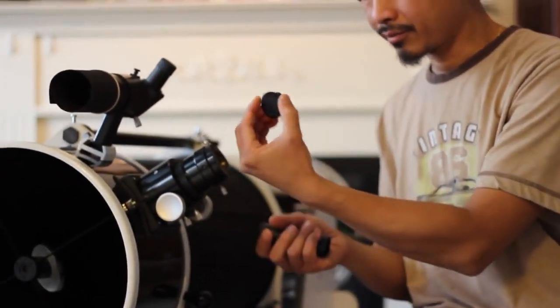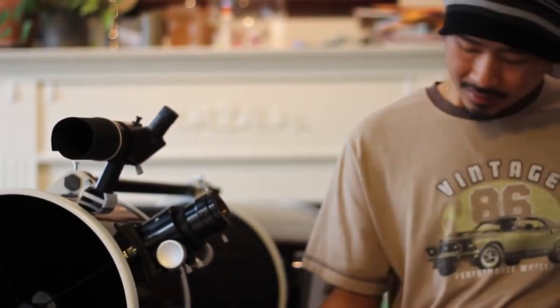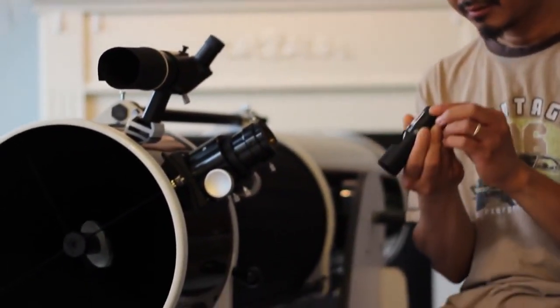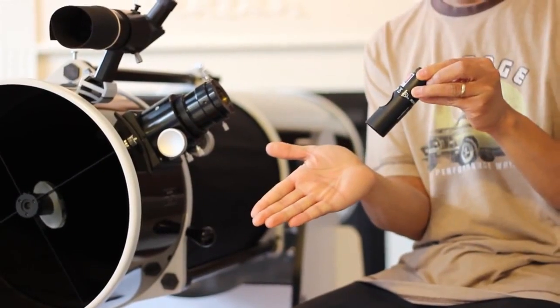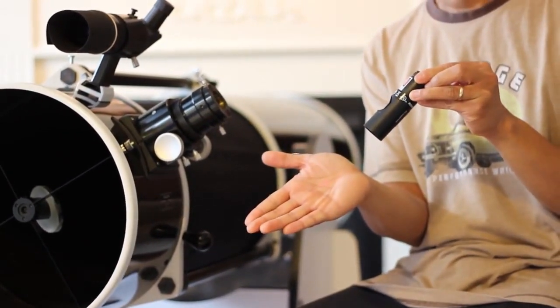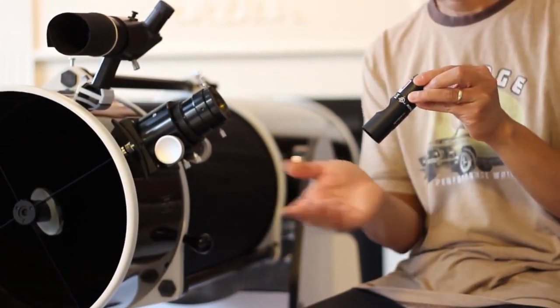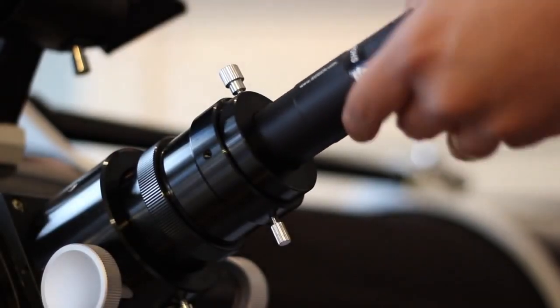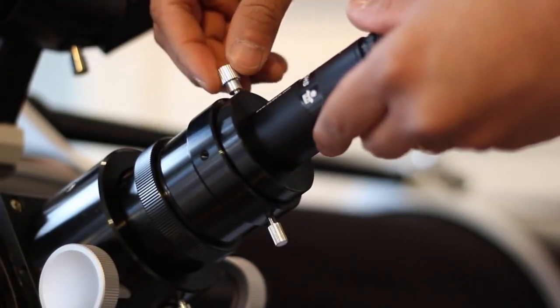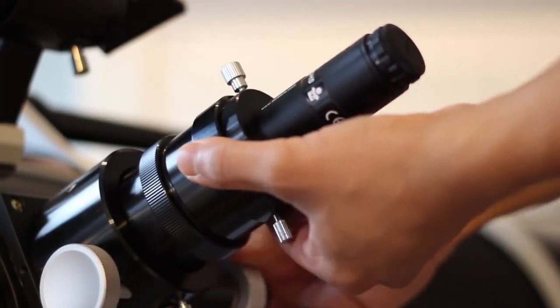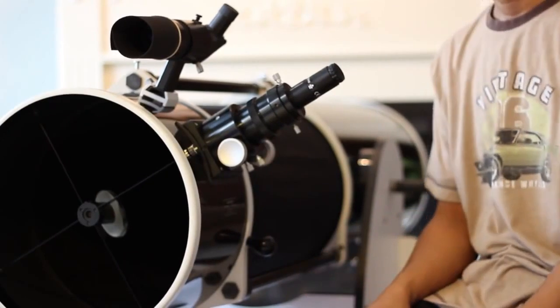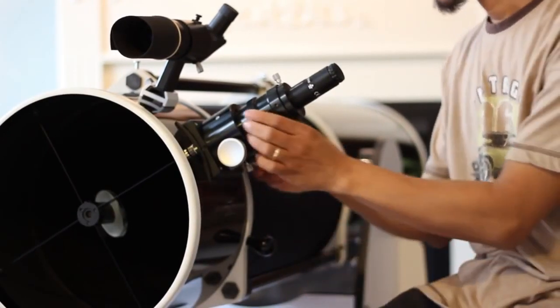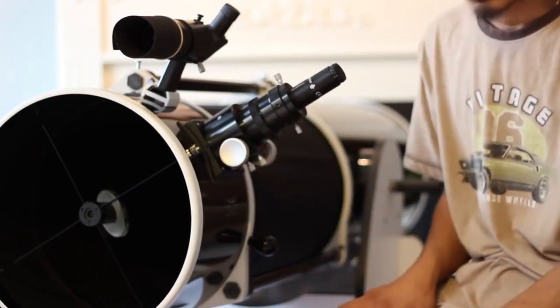First step is to remove the collimator cap. I'm going to turn on the laser, which is going to be red. So it's not going to affect your dark adaptation when you're out in the dark site. I'm going to insert it into the focuser tube. And I'm going to adjust the distance of the focuser as if I have an eyepiece in there. So in this case, I think it's around that much.